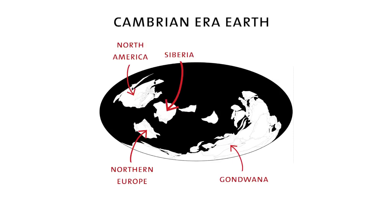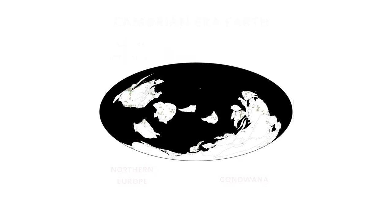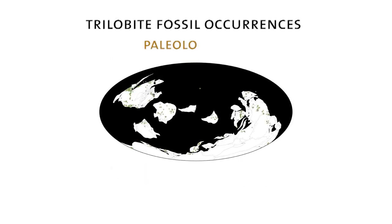So here's the projection of all of the trilobite fossil occurrences in the Cambrian in their paleolocality. And you can see that back in the Cambrian they also were distributed all across the world. They were around the equator. They showed up in polar regions.